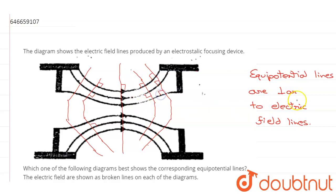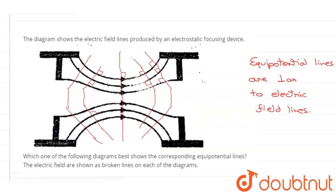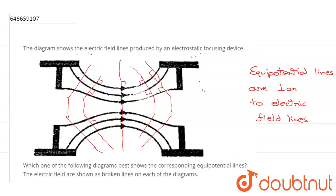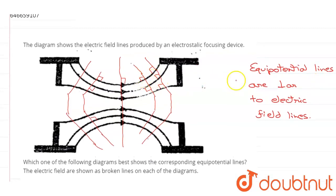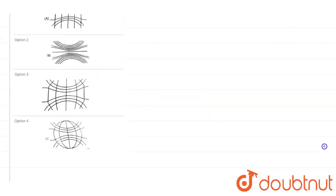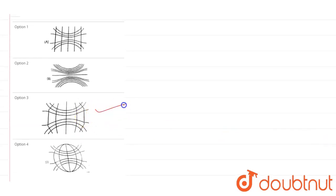And now if we look at the options, the representation of equipotential lines that closely resembles our interpretation is option number three. So option number three is the correct representation of equipotential lines for the given electric field lines.